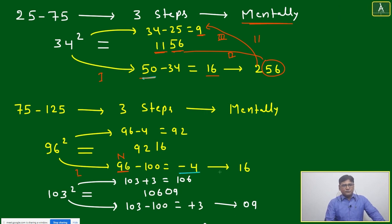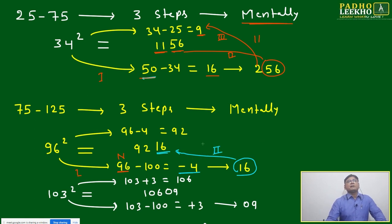Then number minus 100, it is minus 4. After making a square it will be 16, and this will be here. Up to here it's not going to affect, but your third step will be affected. If it is minus 4, 96 minus 4 will come to 92. This will be 92. This is 96 square: 9216.